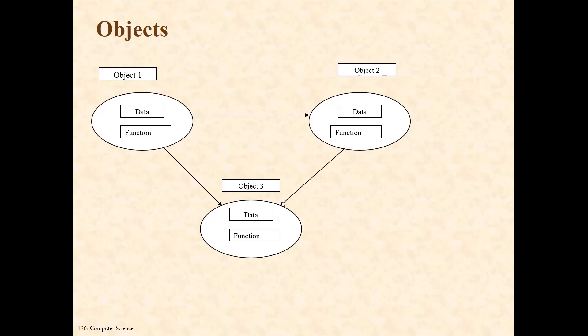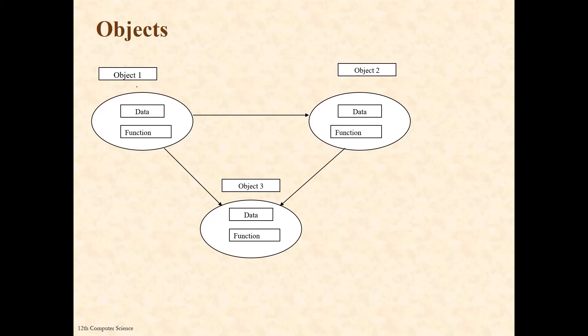In this diagram, you can see that there are three objects communicating with each other, and every object is associated with two things: data — which is the data member — and function, which is also called the member function or method. Every object can also communicate with other objects. Data encapsulation is possible because of this data and function being bonded together. Here, data and member functions are encapsulated together. And since encapsulation is there, data is more secure. Data-hiding is possible in object-oriented programming, which is one of its important features, made possible by the object which encapsulates data and function together.